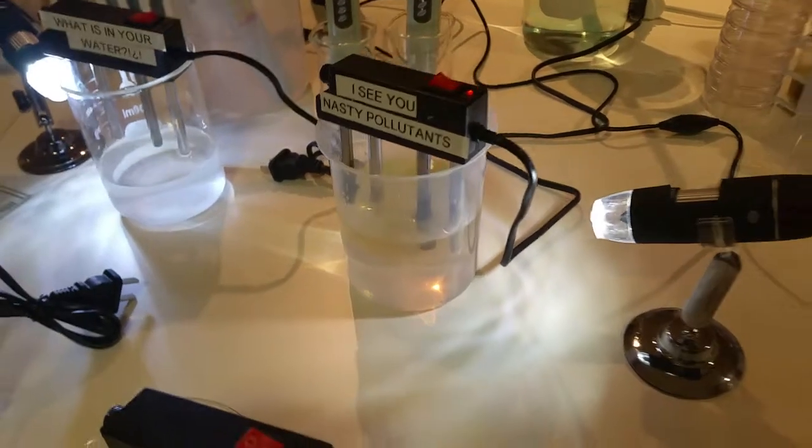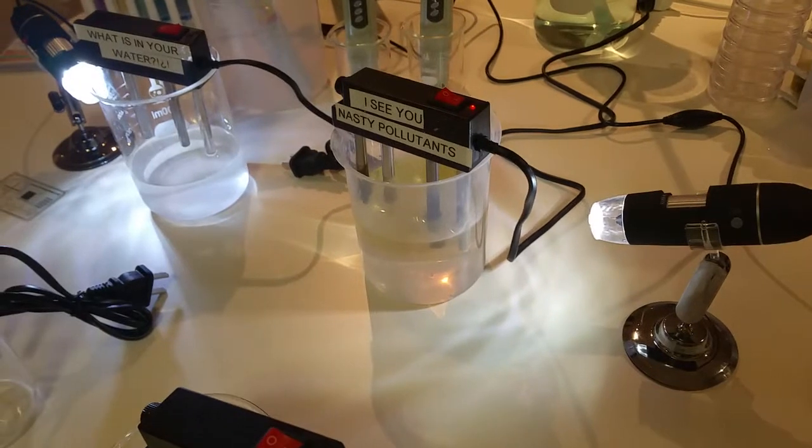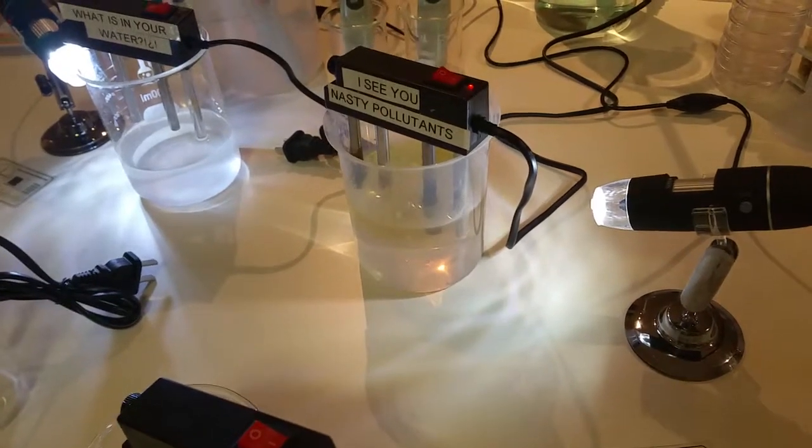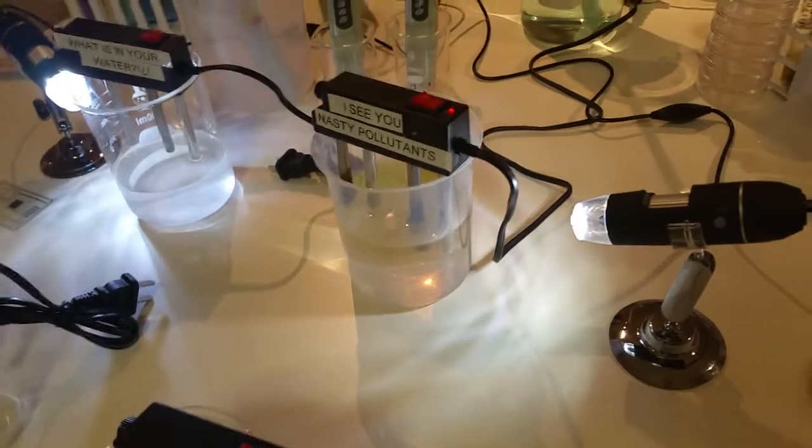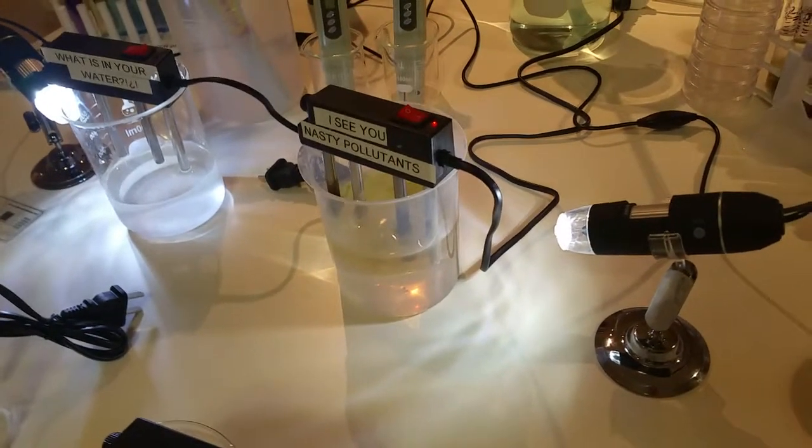We're seeing contaminants starting to show themselves. Now to figure out what the contaminants are, they have different shades of color. So green, red, black, white, they all represent different things.